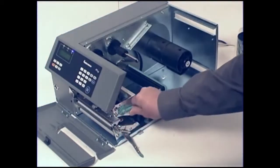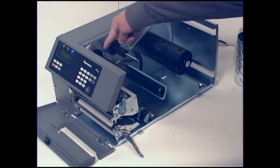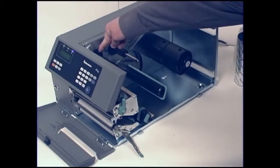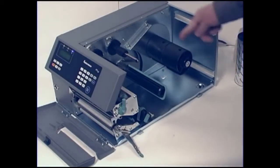Turn the printhead lift lever counter or anti-clockwise to raise the printhead. Remove any unused ribbon and the empty ribbon core. Don't throw the empty core away as it will be attached to the end of the ribbon and used on the ribbon rewind hub.